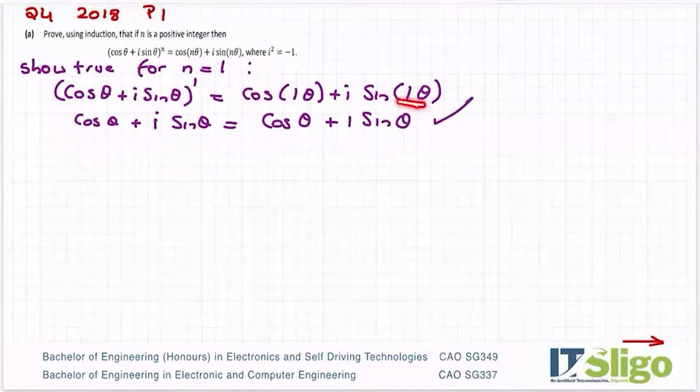So I just basically got rid of the 1s. Okay, so that's you showing that it's true for n is equal to 1. Step 2.